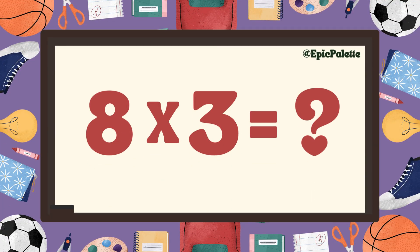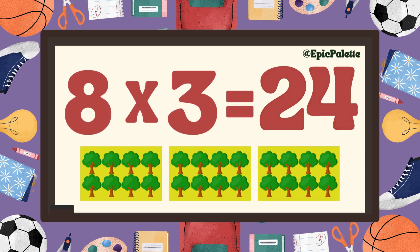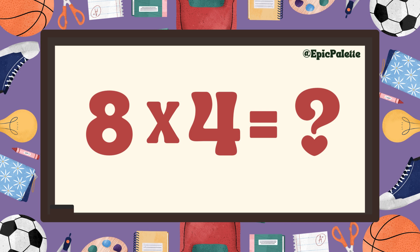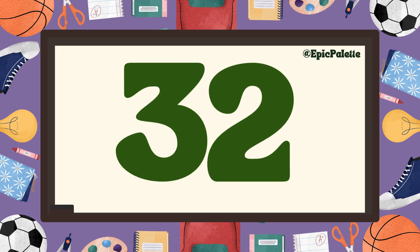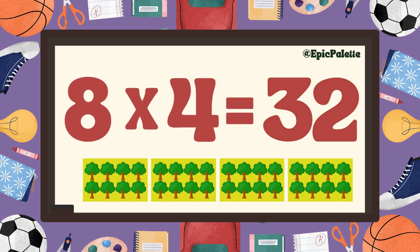Eight times three equals... Twenty-four. That's right. Eight times three equals twenty-four. Excellent. Eight times four equals... Thirty-two. That's right. Eight times four equals thirty-two. Excellent.